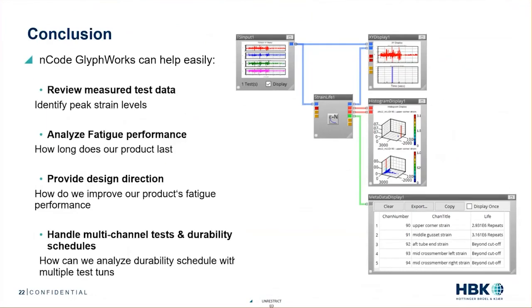In conclusion, ENCODE can help us review measured test data, better understand the test conditions, and identify areas of interest. For this example, we demonstrated that ENCODE can perform fatigue analysis using standard methods like SN or EN approaches. ENCODE can handle strain gauges, strain rosettes, single tests, multi-tests, and full durability schedules — making it a comprehensive tool for fatigue and durability analysis.